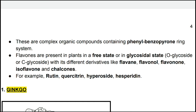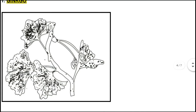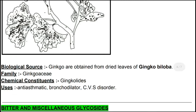Examples of flavone glycosides include rutin, quercetrin, hyperoside, and asperutin. The drug Ginkgo: biologically, Ginkgo is obtained from dried leaves of Ginkgo biloba. The family is Ginkgoaceae. Chemical constituents include ginkgolides. Uses: anti-asthmatic, bronchodilator, and treatment of cardiovascular disorders.